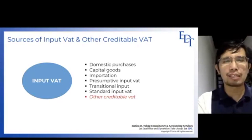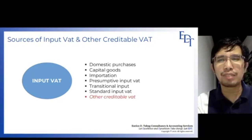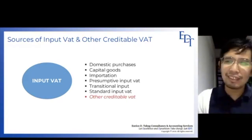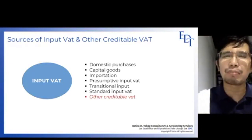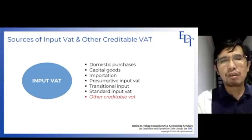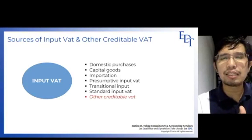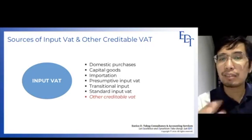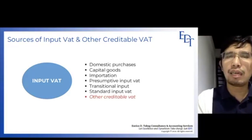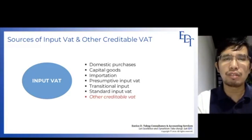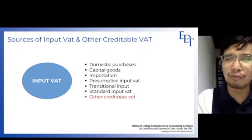For input VAT, there are six items, with the sixth being other creditable VAT, which we'll discuss in a separate video. In this video, we will discuss the first three items: input VAT on domestic purchases of goods or services, input VAT on capital goods, and input VAT on importation.